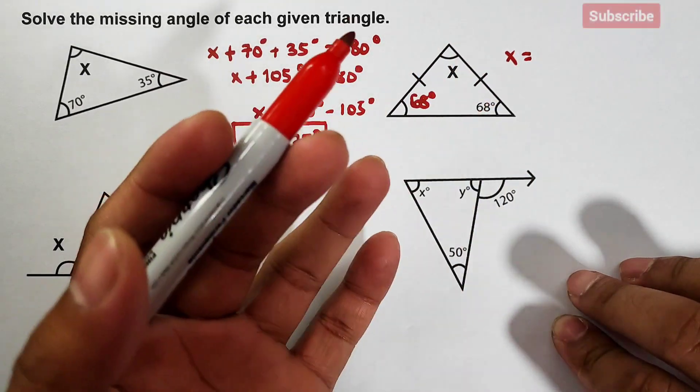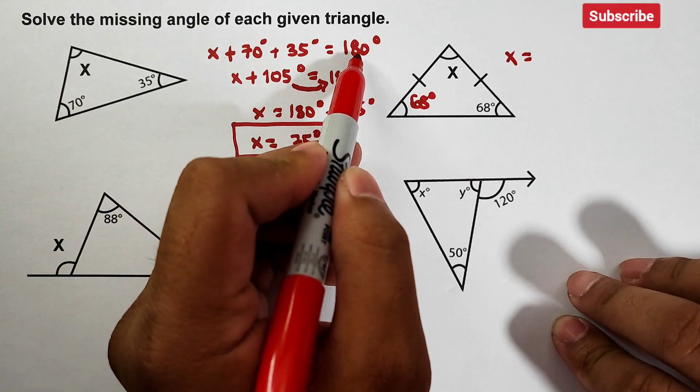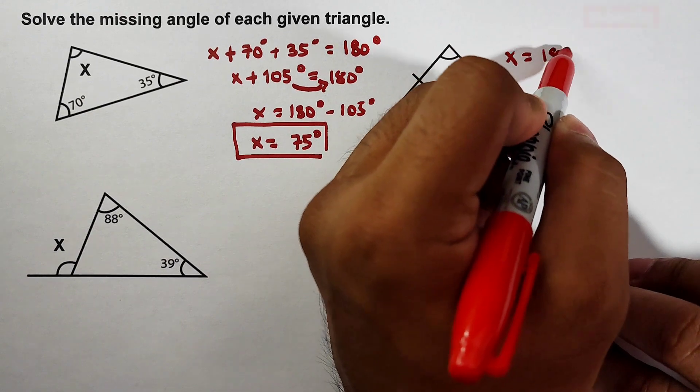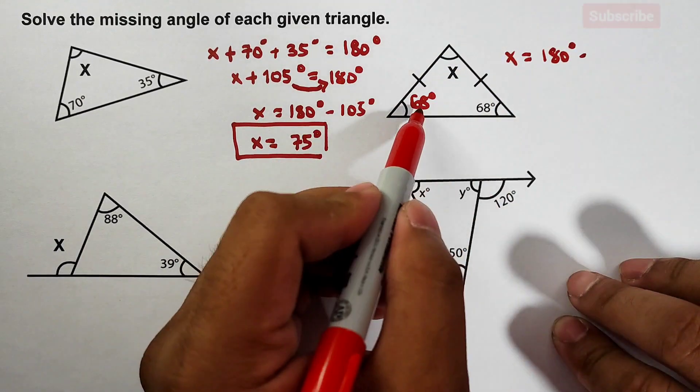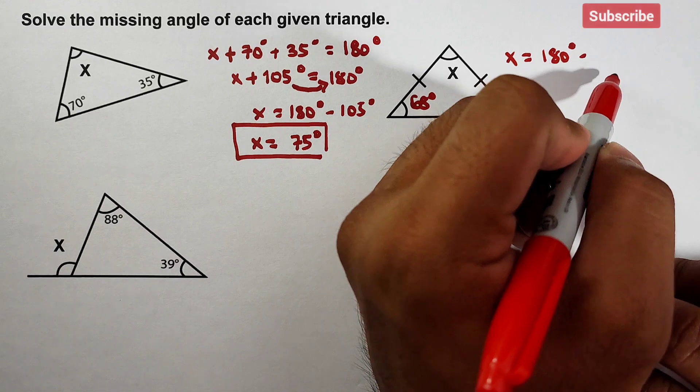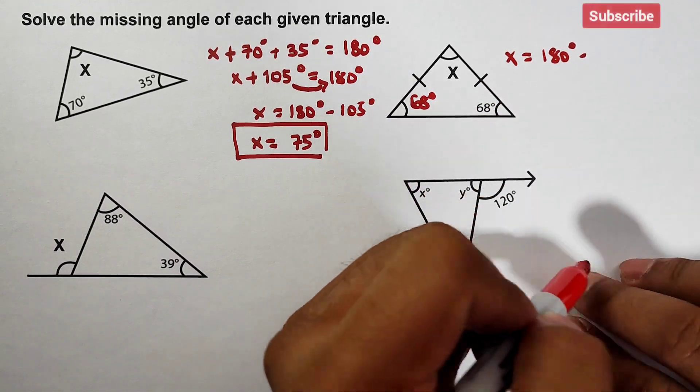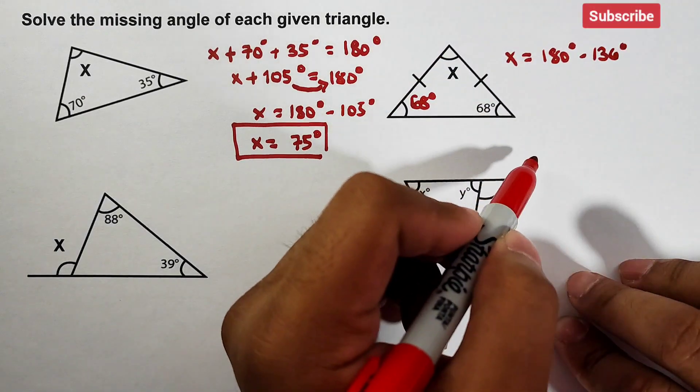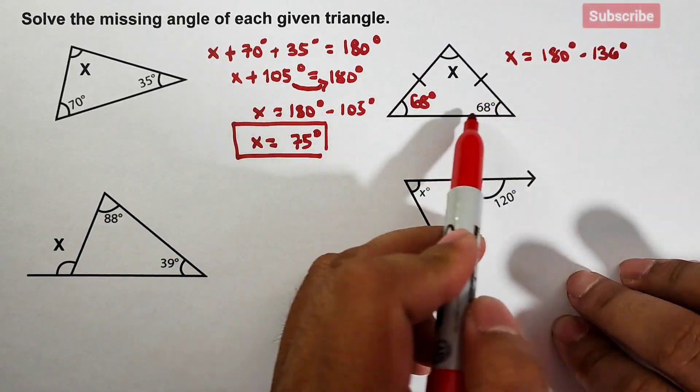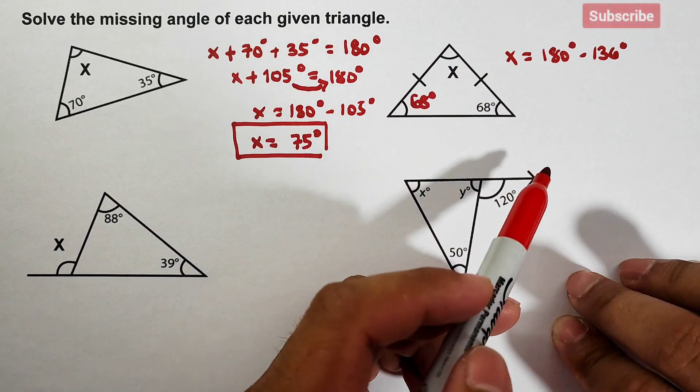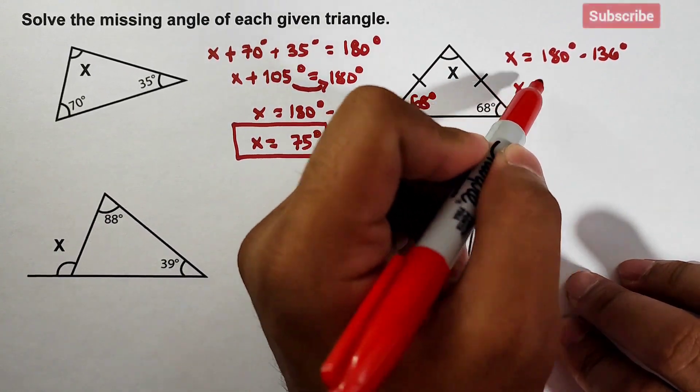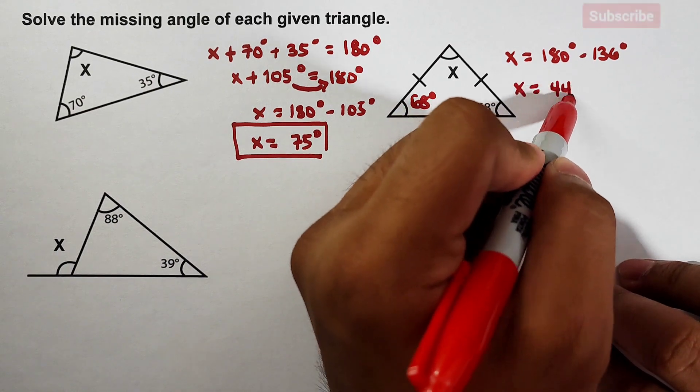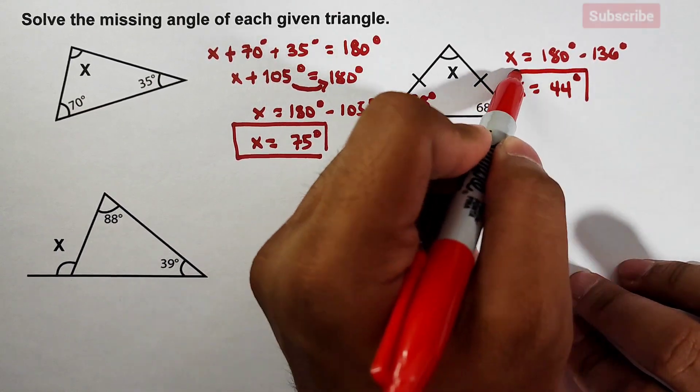We will try to use the shortcut. We will try to subtract these two angles from 180, so we have 180 degrees minus the sum of 68 and 68, that is 136 degrees. Okay, because we will transpose the sum of these two which is 136, then your x is equal to 44 degrees. This is the measurement of this missing angle.